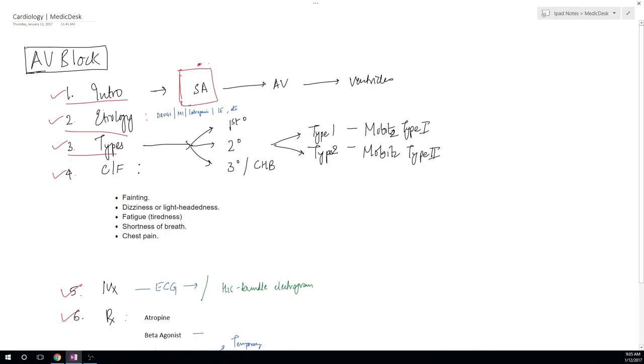AV block is when the impulses are generated from the SA node, they go to the AV node and they get filtered out in the form of decrease in the impulses, and then it goes to the ventricles.